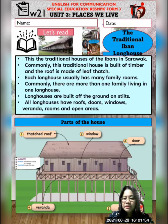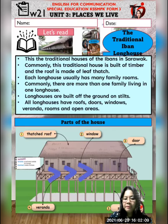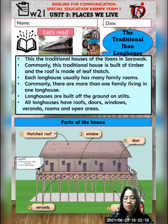Dia kata all longhouses have roofs, doors, windows, veranda, rooms and open areas. Biasanya ini ialah veranda - maksudnya anjung. Kawasan lapang kat luar ni, depan ni dipanggil veranda. Kalau rumah-rumah lama, rumah-rumah tradisional pun ada, dia macam anjung kan - dia open. Open areas maksudnya ruang terbuka. Ini adalah part of the traditional Iban Longhouse.